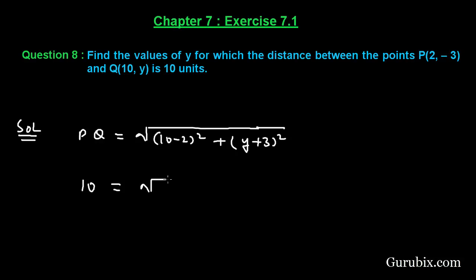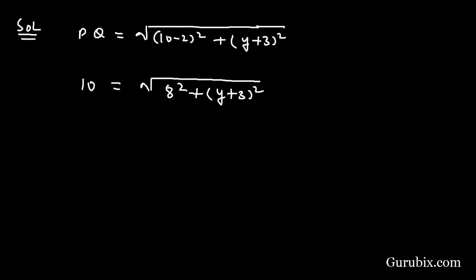This means 10 equals square root of 8 square plus (Y plus 3) square. And now we shall square both sides to get rid of this square root.